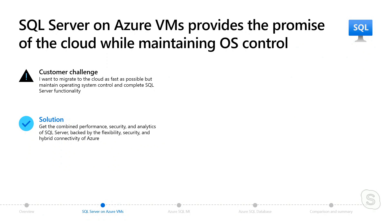They might have hardware with a contract that's expiring. They might have SQL Server 2008 or 2008 R2. They might be wanting to move to the Cloud as fast as possible but not wanting to make big application changes, or commonly we see people leveraging third-party applications that require access to the OS.